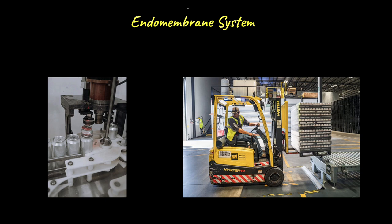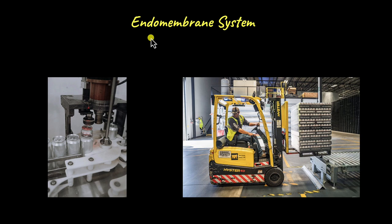What is the endomembrane system? It is the system responsible for the production of proteins and lipids in the cell, and it is made up of a series of interconnected cell organelles. Eukaryotic cells have different cell organelles that perform different functions, and the endomembrane system includes those organelles that are somehow connected and perform a coordinated function.